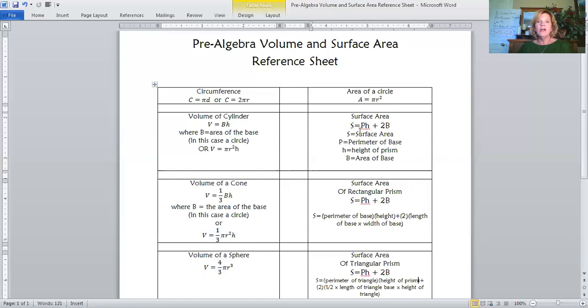Then on the other side is surface area. We said surface area was pH plus 2B. P is the perimeter of the base. H is the height of the prism. And there's two bases, one on either end. And so it depends on what the base is, how to calculate the area.